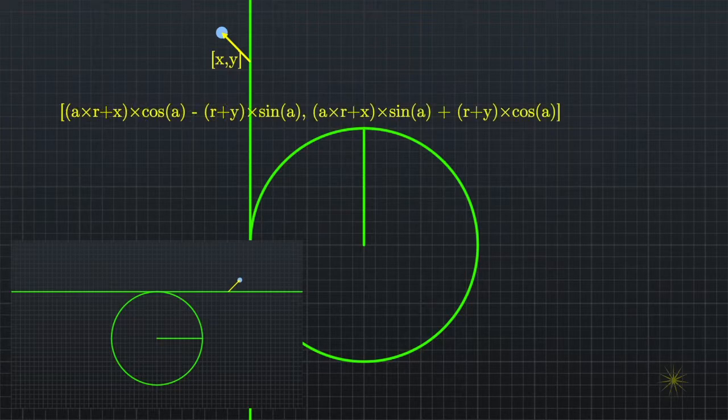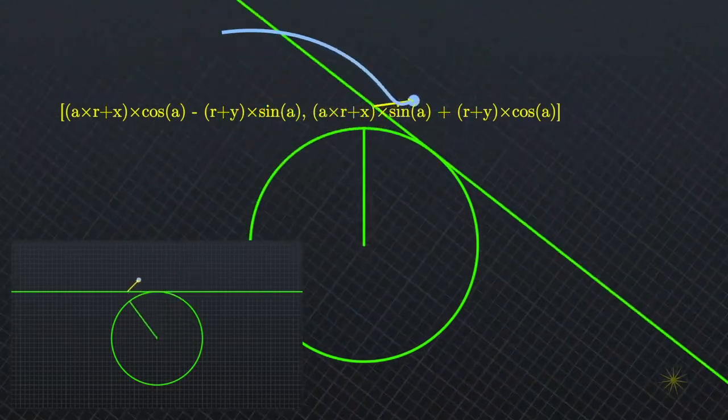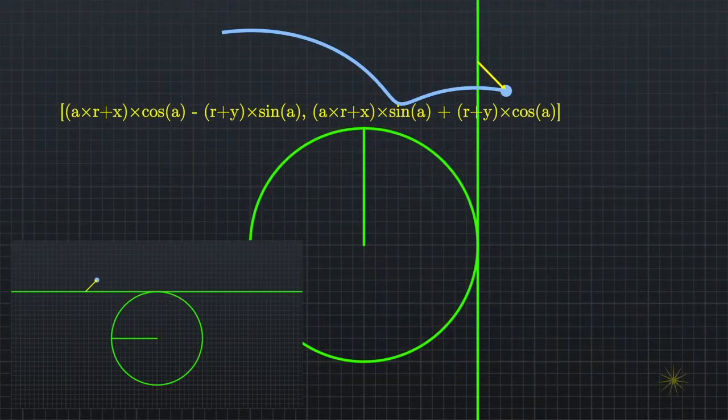Rewriting our involute equation, we get the following expression. And we can plot each of these curves as we offset to the left or to the right of our original point.